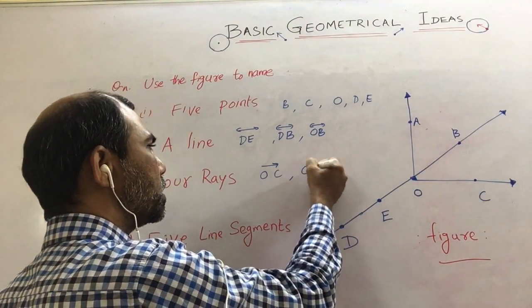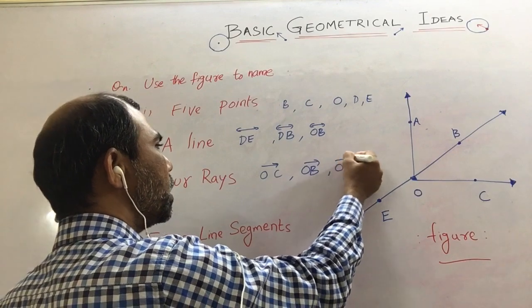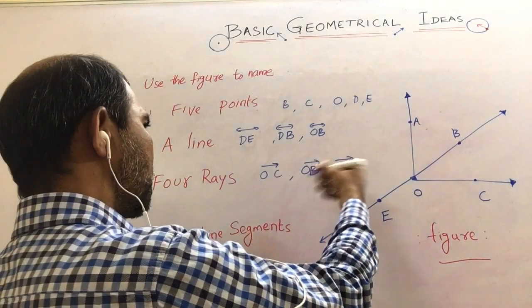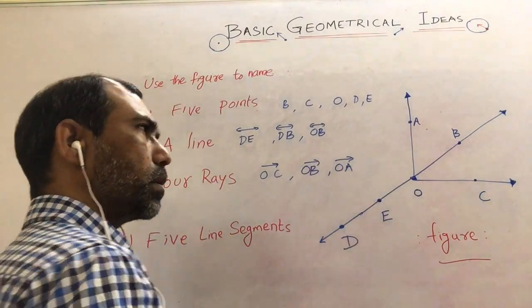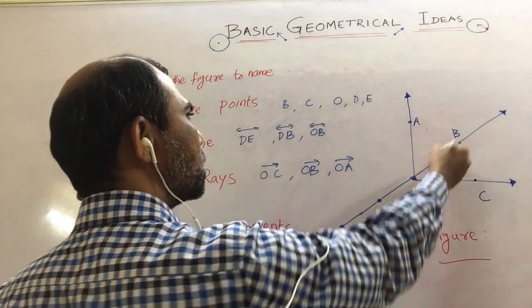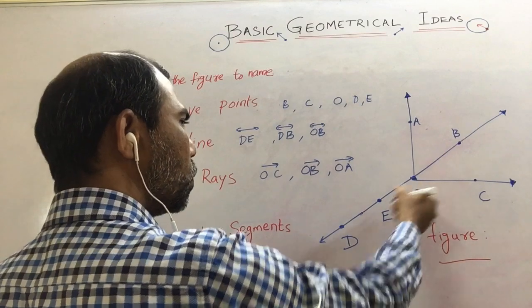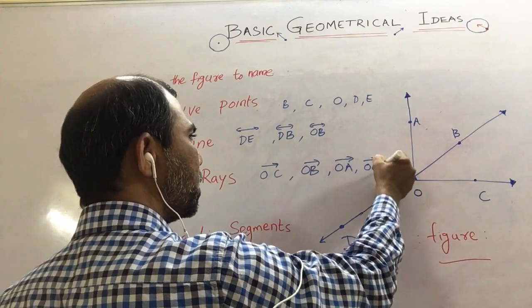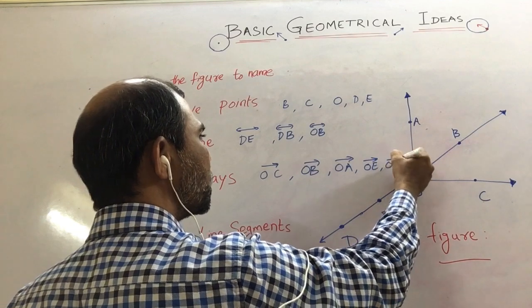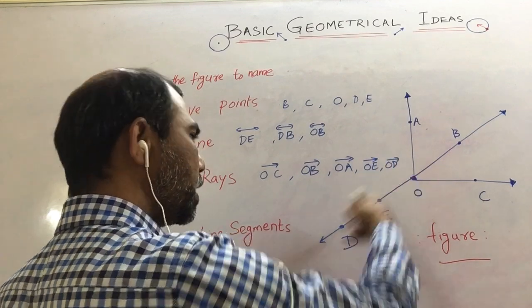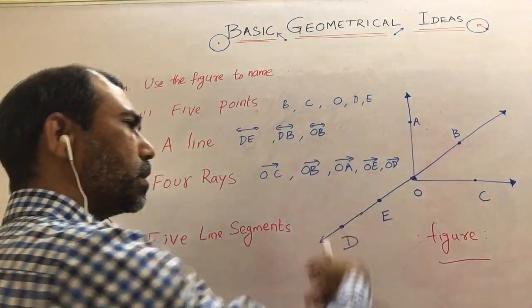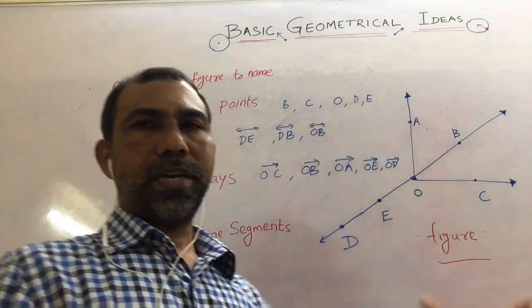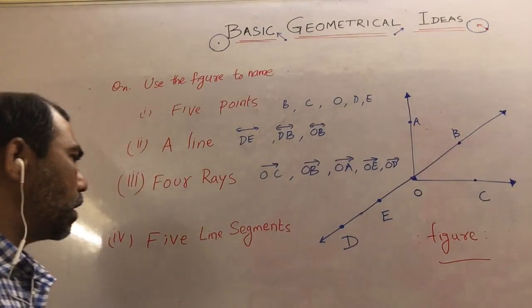Even OB can be an answer for this and OA can be a ray. Here only three rays we got. Can we write OE as a ray? Yes, of course. And OE you can write as ray. And even OD also you can write. O is initial point and this direction that ray is extending.